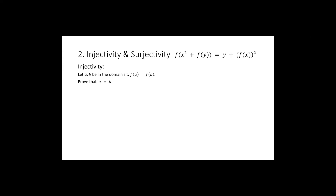The idea is to look for a variable which only appears as f of that variable and also appears outside of any f. If you plug in a and b separately for that variable, you get two equations where f(a) equals f(b) makes both sides match, and the only difference is the bare variable outside the function. In our case, setting y equal to a and then to b, the left-hand sides are equal, so the right-hand sides are equal, and we can cancel — therefore a equals b. So we've proven the function is injective.